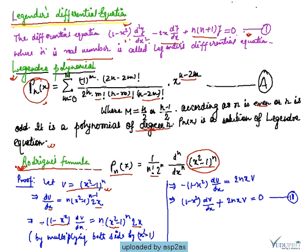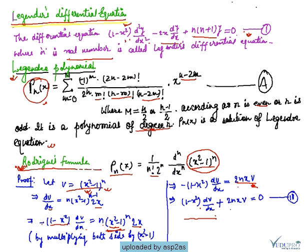So we have (1-x²) dv/dx = 2nxv, since (x²-1)^n = v. This implies 1-x² times dv/dx plus 2nxv equals 0. We call this equation 2.